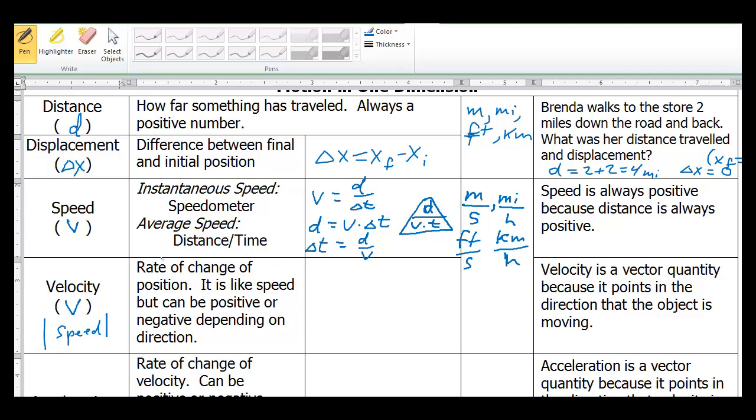Let's look at the definition for velocity. Velocity is the rate of change of position. It is like speed, but can be positive or negative, depending on direction. And we generally say that an object moving to the right is a positive velocity. An object moving to the left is a negative velocity.